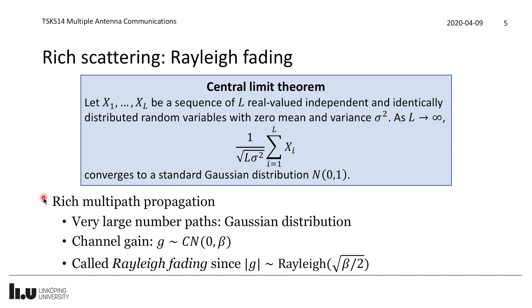In our case, the sequence of L random variables represents the L propagation paths. Assuming rich multipath propagation with a very large number of paths, we get a Gaussian distribution. Since we have complex-valued channels with uncorrelated real and imaginary parts, we apply the CLT separately to each, yielding a complex Gaussian distribution with zero mean and variance β. In practice, around eight paths is already enough for this to be a very good approximation.